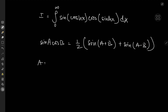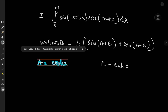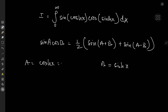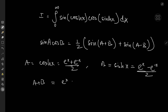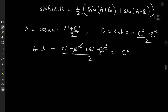In our case, a equals cosh(x) and b equals sinh(x). The hyperbolic functions are defined nicely in terms of exponential functions: cosh(x) = (e^x + e^{−x})/2 and sinh(x) = (e^x − e^{−x})/2. So a+b equals (e^x + e^{−x} + e^x − e^{−x})/2. We have some lovely cancellation and get 2e^x/2, which is e^x. By similar token, a−b equals e^{−x}.